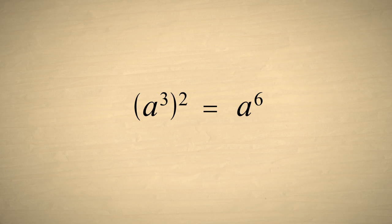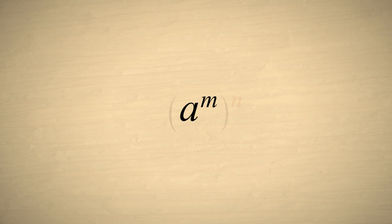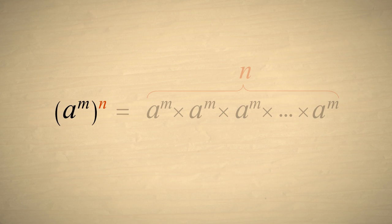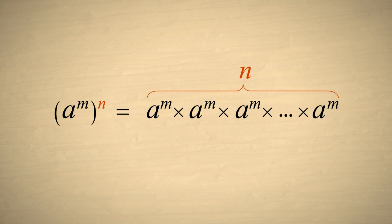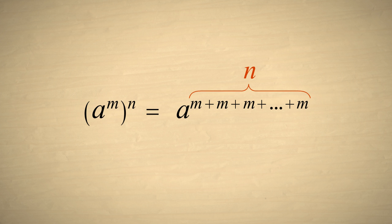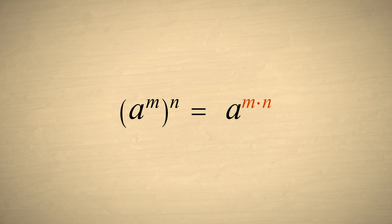Notice that the exponent of a times the power this expression was raised to equals the exponent of the result. In general, if we start with a with an exponent of m and raise that expression to some power n, this is equivalent to n copies of that expression multiplied together. Since these multiplied expressions have the same base, we can add their exponents, giving us an exponent of n m's added together. m added together n times is m times n.